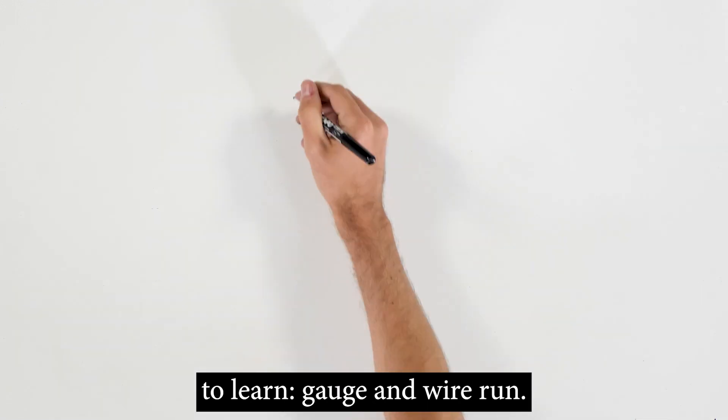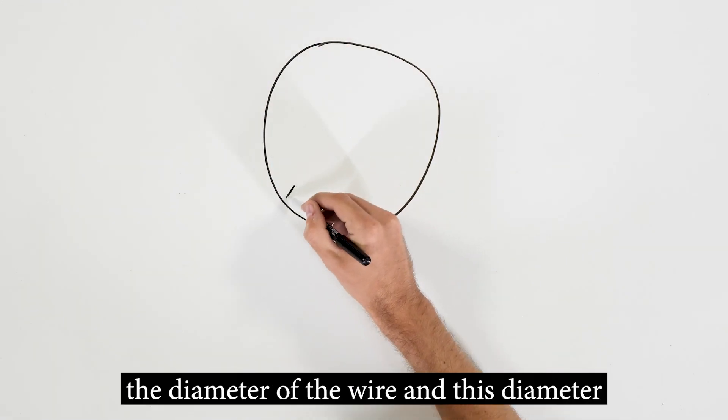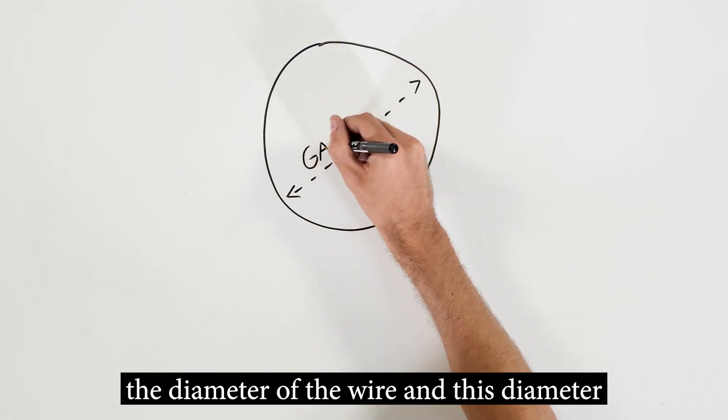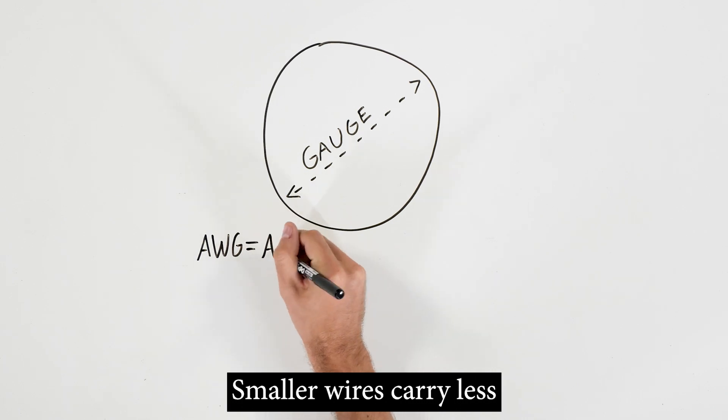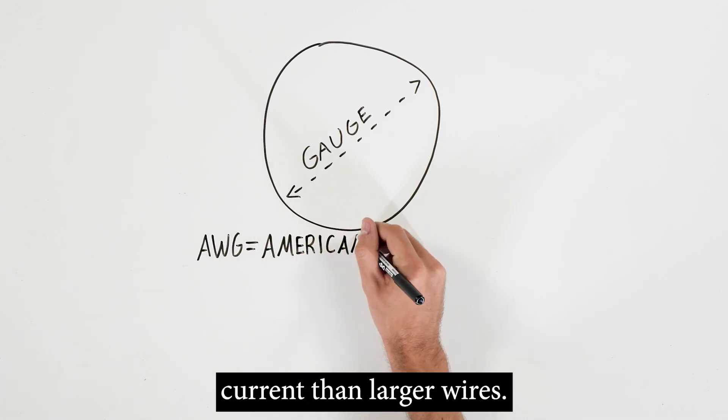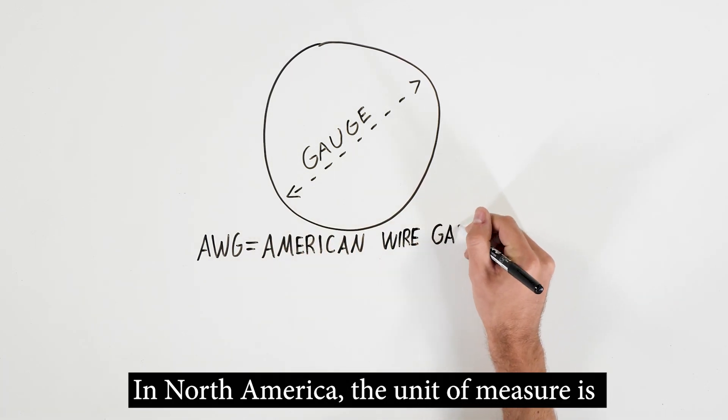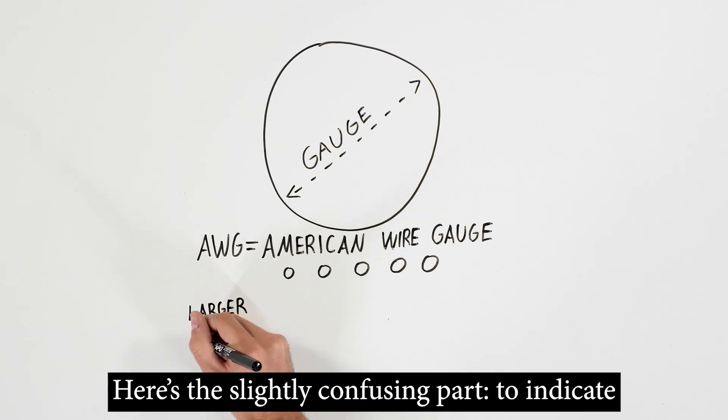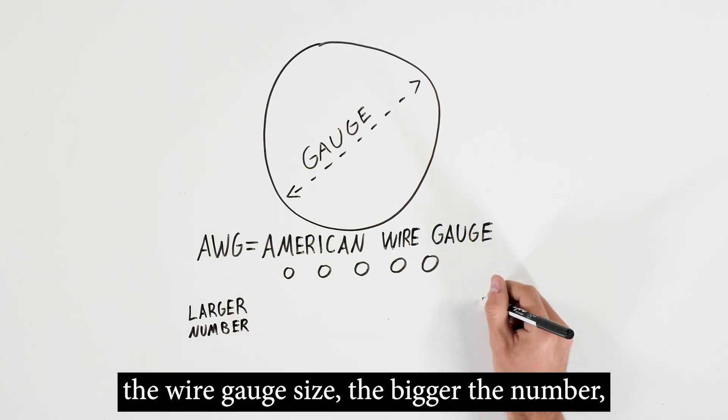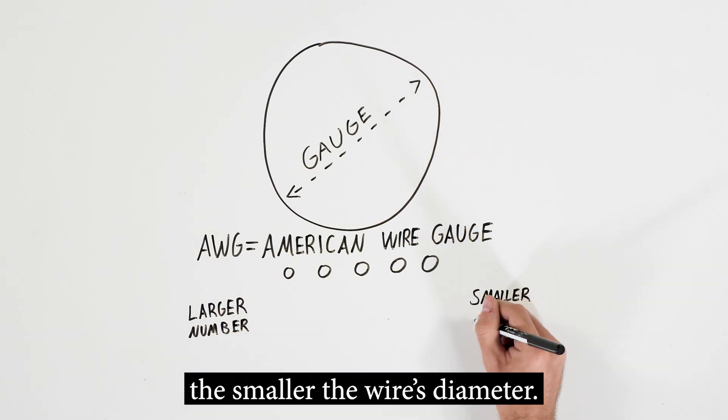In the electrical world, gauge indicates the diameter of the wire, and this diameter determines how much electrical current the wire can safely carry. Smaller wires carry less current than larger wires. In North America, the unit of measure is designated as AWG, the American Wire Gauge. Here's the slightly confusing part. To indicate the wire gauge size, the bigger the number, the smaller the wire's diameter.